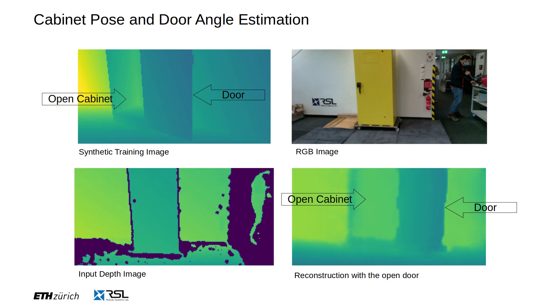In the top left, you can see an example of an image presented at training time. The top right shows the RGB image of a real world scene with a cabinet. The corresponding depth image is in the bottom left. In the bottom right, we show the reconstructed scene with the switchboard cabinet being open.